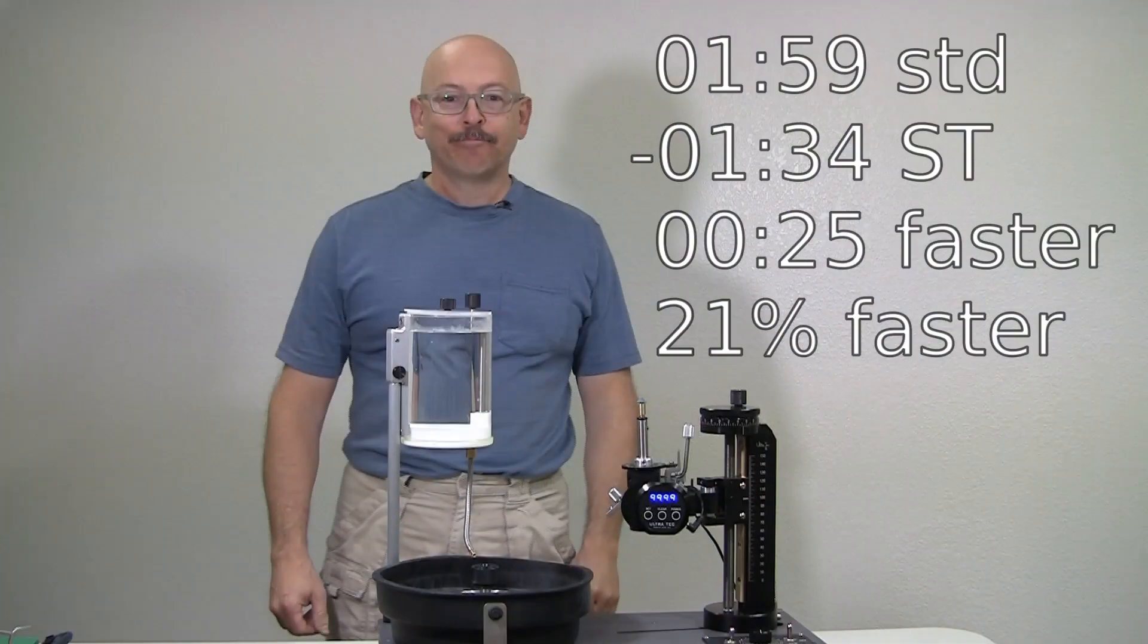The facet row cut with standard machine handling took us a minute and 59 seconds. The facet row cut with the speed trigger only took us a minute and 34 seconds. That's 25 seconds faster just to navigate the index gear and take off about a quarter of a degree worth of depth. That's 21% faster. And that translates to money.